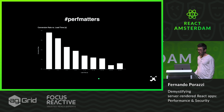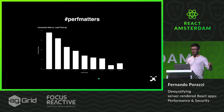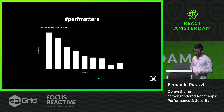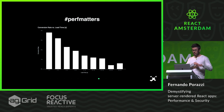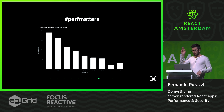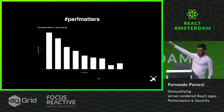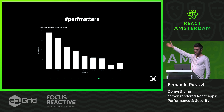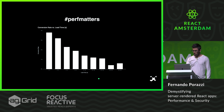Still talking about performance — it's important to take into account that performance matters, and it's a huge thing for conversion rate. Horizontally we have the time an application takes to render, and the conversion rate vertically. The more to the left — so the higher the performance — the higher the conversion rate of your application.